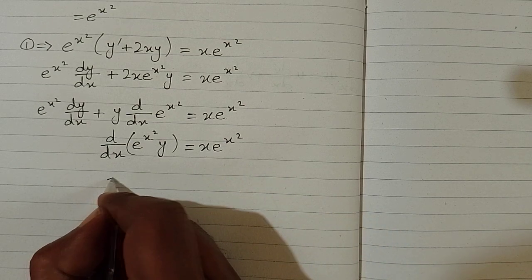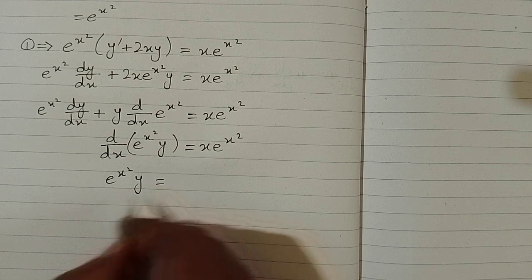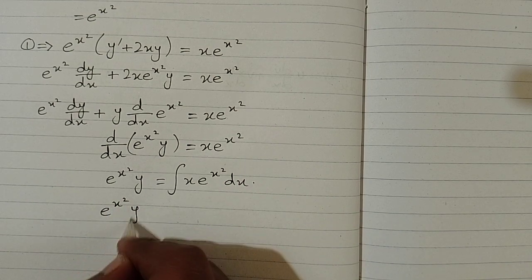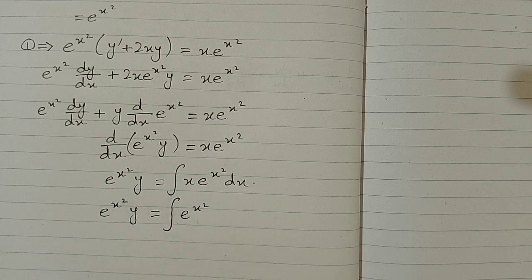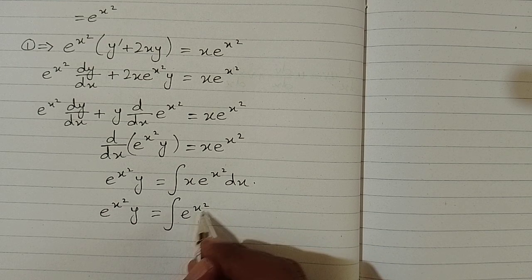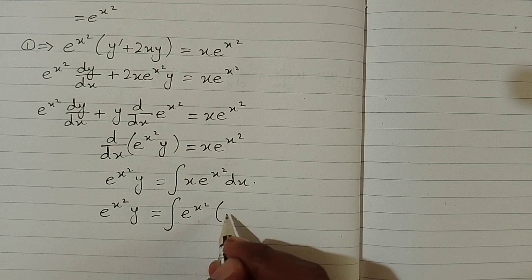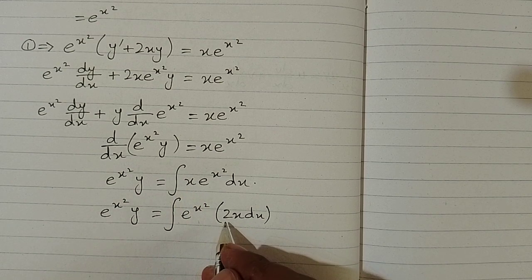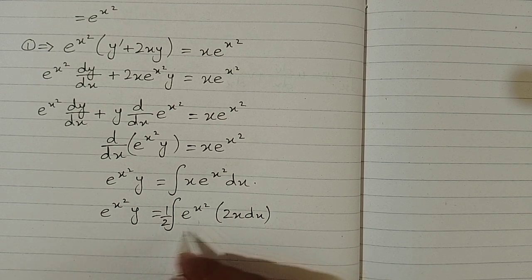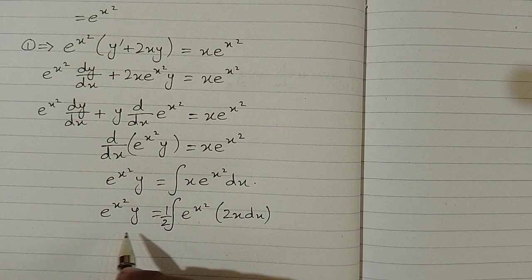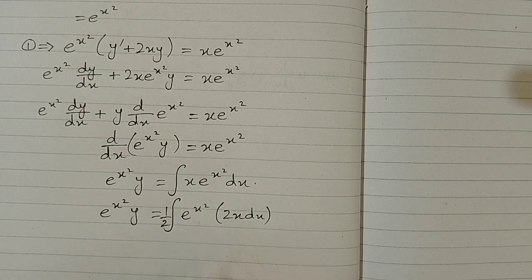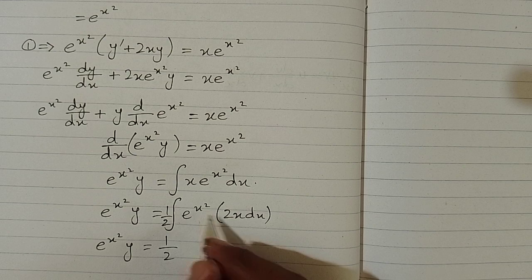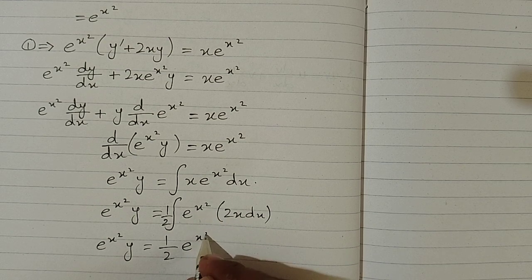Now we integrate both sides with respect to x, so e^(x²)·y = integral of x·e^(x²) dx. We need the differential of x², which is 2x dx. Since we only have x dx, we multiply by 1/2 so that (1/2)·2x = x. Thus e^(x²)·y = (1/2)·integral of e^(x²)·2x dx = (1/2)·e^(x²) + c.